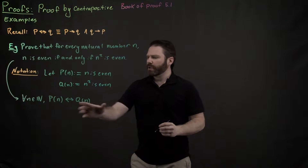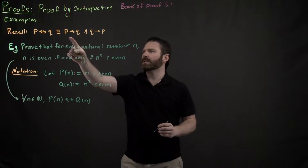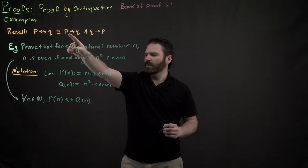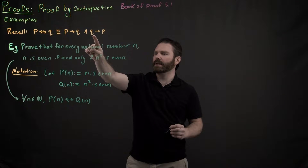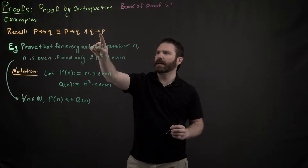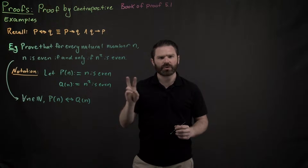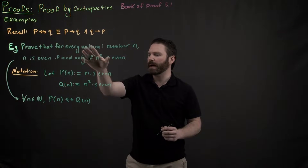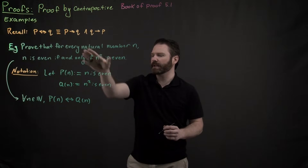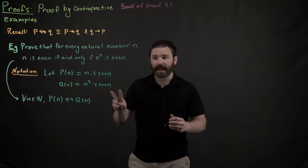We know that P(n) if and only if Q(n) is logically equivalent to P(n) implies Q(n) and Q(n) implies P(n). So we're really going to have to do two separate steps here if we want to prove this biconditional statement. In our proof, it's going to take two steps.